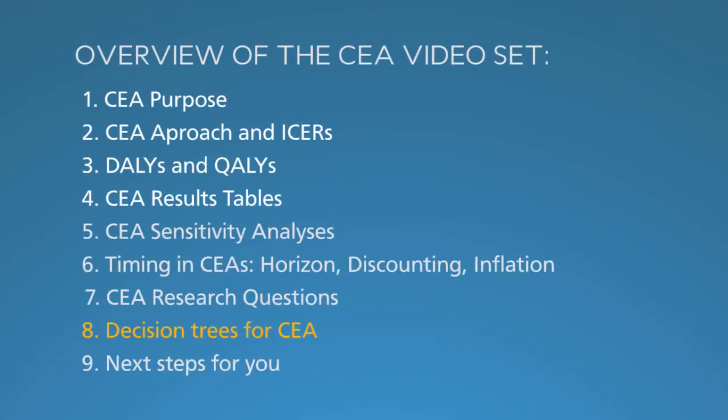So far in this series, you've learned why to do CEAs and key elements of how: the incremental cost-effectiveness ratio, DALYs and QALYs, sensitivity analyses, and other issues. In the last segment, you learned how to present CEA in a research proposal. In this segment, we will look at decision trees for CEA. We have a few introductory comments and then a short animation on the use of decision trees to structure your analysis.